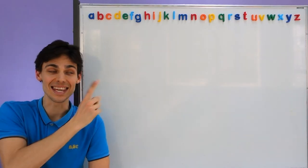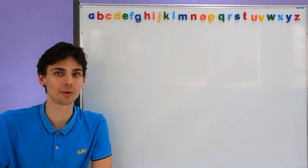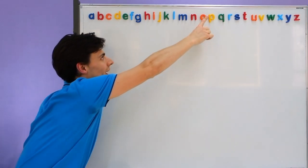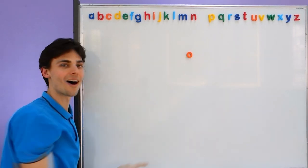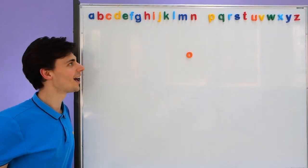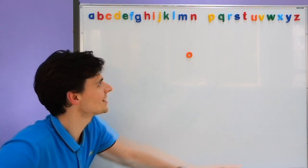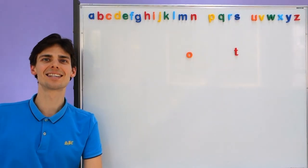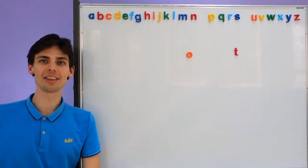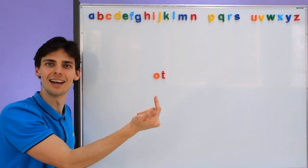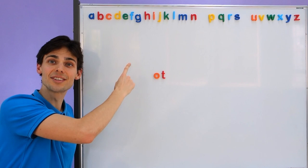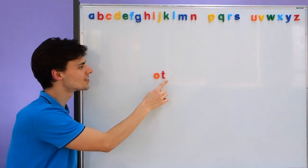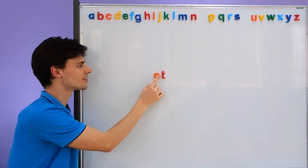Today we're going to learn these letters. We're going to learn A, A, A, and T, T, T. Together these make A, T. This is A-T, A-T.